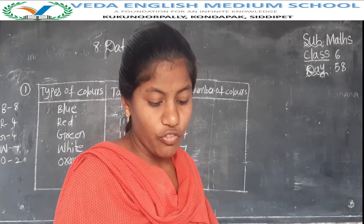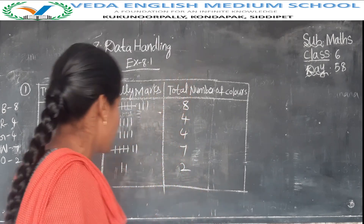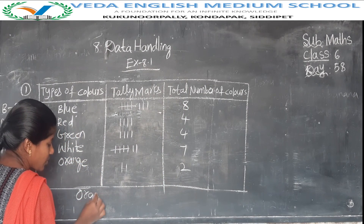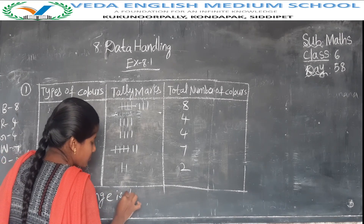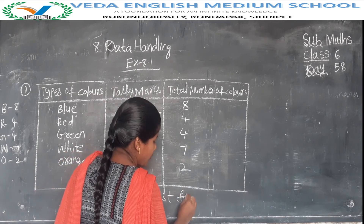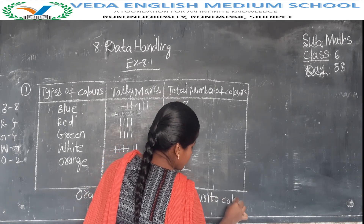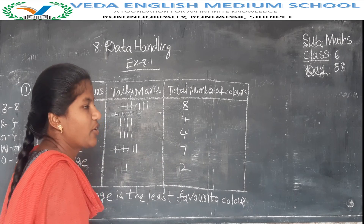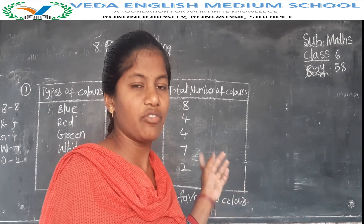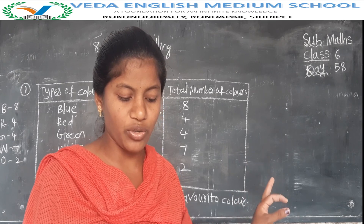Now the question asks: which is the least favorite color of the students? Orange is the least favorite color, as only 2 students chose it. So like this you have to find the answers. Remaining third and fourth problems are there — you have to complete them by using tally marks the same way.